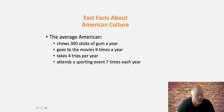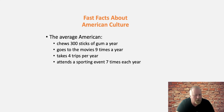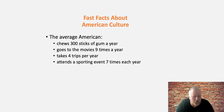When we think about American culture overall, there are things very specific to Americana. Many people might think about the homogeneity of the culture in the United States, but there are so many pockets of subculture that fall within it. For example, the average American chews 300 sticks of gum a year, goes to movies nine times a year, takes four trips per year, and attends sporting events on average seven times per year. These are characteristics about consumption at the cultural level for America.